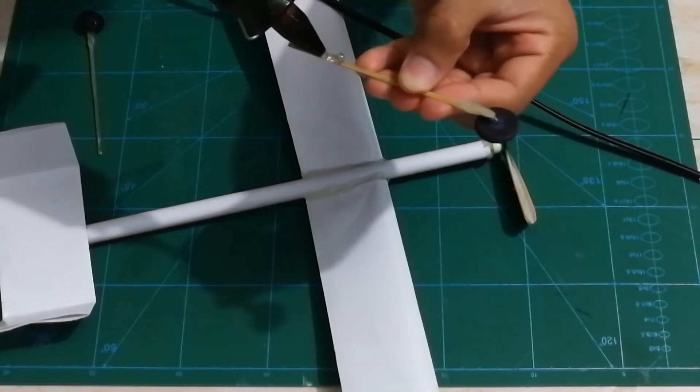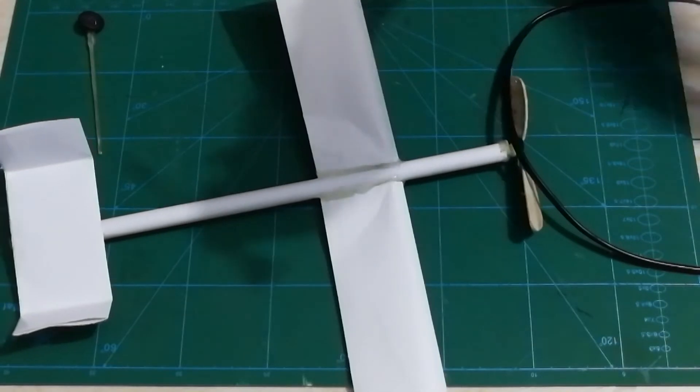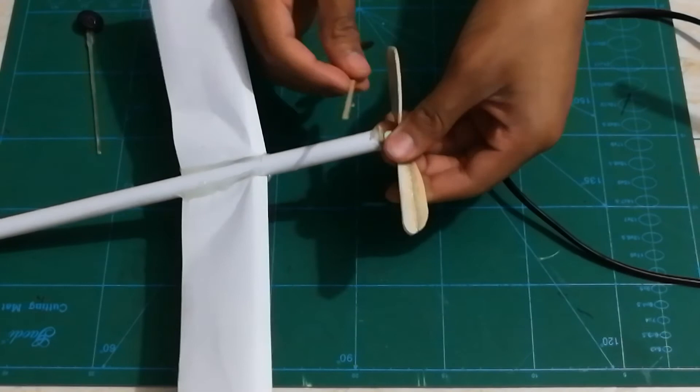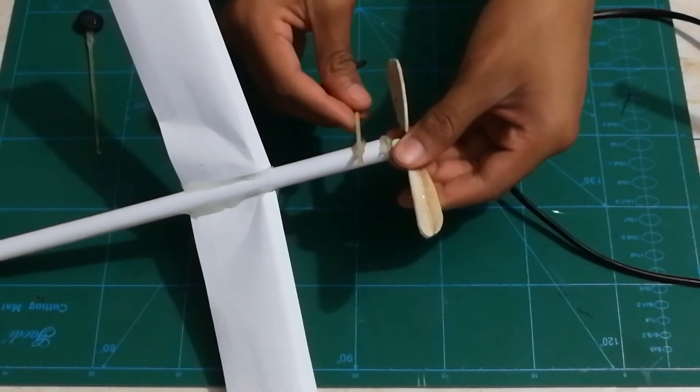Grab your hot glue gun and stick a portion to your barbecue stick or the bamboo stick. Stick it to the nose of the plane just like this. Be sure to have a wide angle.